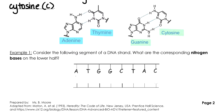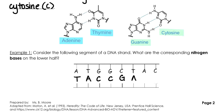Let's try an example. Consider the following segment of DNA — what are the corresponding nitrogen bases on the lower half? Please pause the video here while you try this question. To solve a problem like this, we look at each nitrogen base and ask what it pairs with. Adenine pairs with thymine, thymine pairs with adenine, guanine pairs with cytosine, and cytosine pairs with guanine, and so forth.